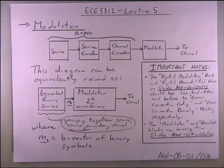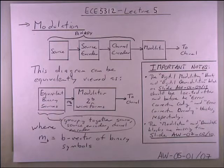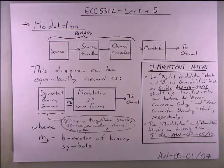This is Lecture 5 of ECE 5312. In the last lecture we looked at ways of protecting our information and making it compact enough to transmit across a medium efficiently — that's source coding and channel coding. That's probably the only time we're going to look at those in this course, because they each have their own respective courses. What we're going to do now in this lecture is look at modulation.